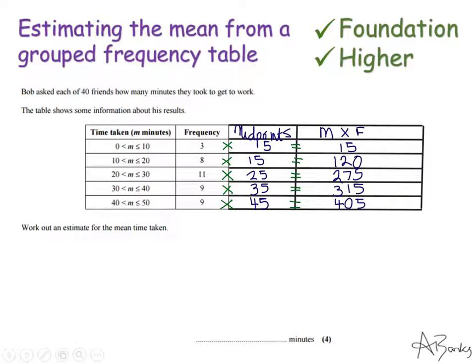So now I've got my midpoint times my frequency. In order to find the grand total I need to add these up. So I'm going to write down at the bottom here the total for all of the 40 people and I'm going to write it in my calculator. It is 1130. So these 40 people all together took 1130 minutes to get to work.